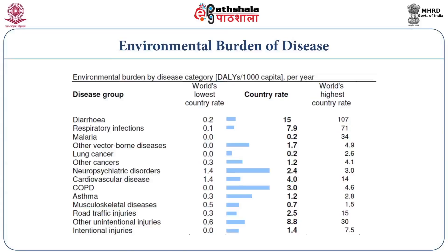Various disease groups have been looked at from the point of view of the number of DALYs lost both in India and globally. For example, the number of DALYs lost due to diarrhea: the world's lowest country rate is 0.2 DALYs per thousand population, the world's highest rate is 107 DALYs per thousand population, and India is at 15 DALYs per thousand population. Similarly, data has been presented for respiratory infections, malaria, other vector-borne diseases, lung cancer, other cancers, neuropsychiatric disorders, cardiovascular disease and so on.